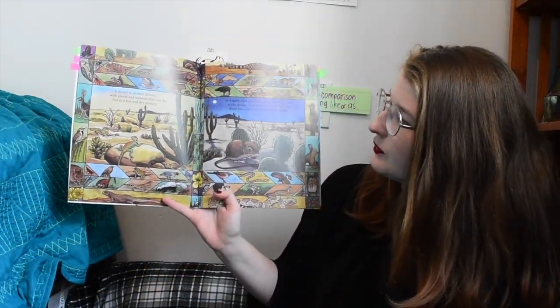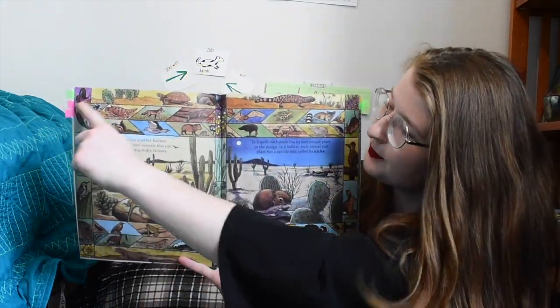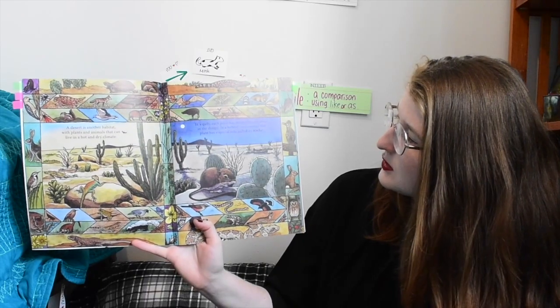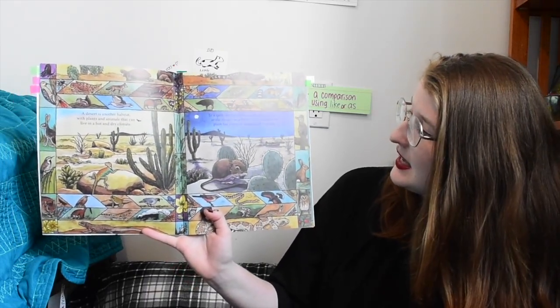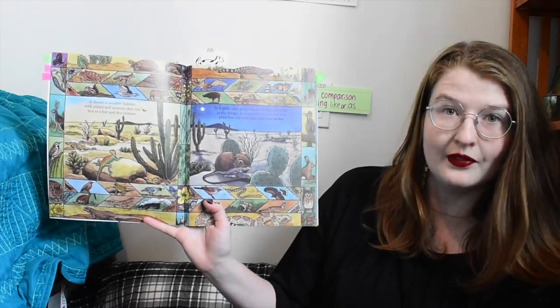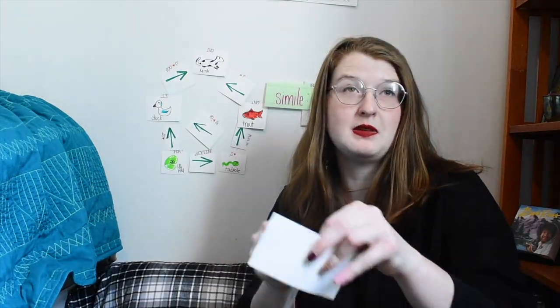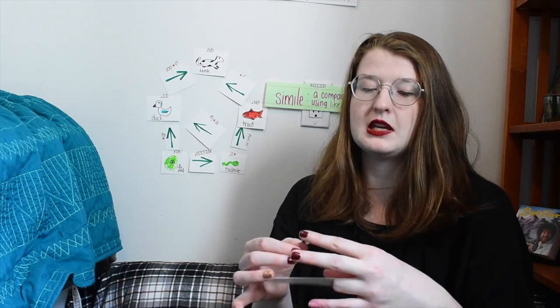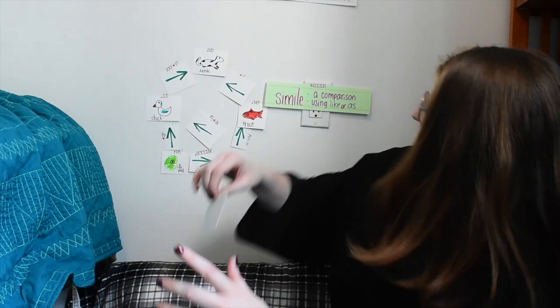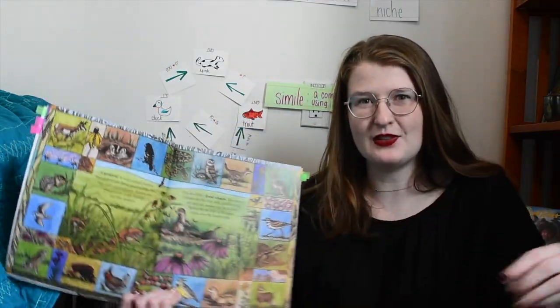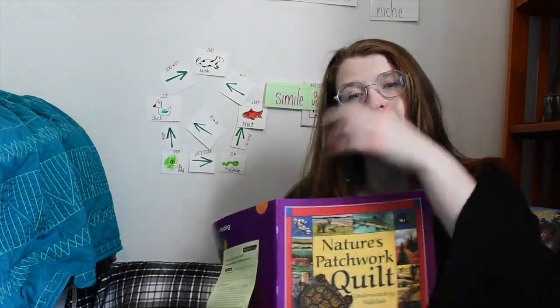A desert is another habitat with plants and animals that can live in a hot and dry climate. The pictures on this page show all the different boxes of things and animals in a desert habitat. In a quilt, each piece has its own unique place in the design. In a habitat, each animal and plant has a special role — it's called a niche. Think of it as the animal's job. My niche would be being a teacher; a mouse's niche in the desert would be to scatter seeds from plants or be food for another animal. I like how this book uses what we call an extended metaphor — using the analogy of the quilt to help us see nature.